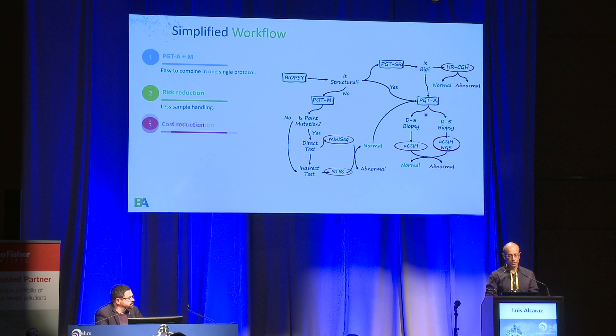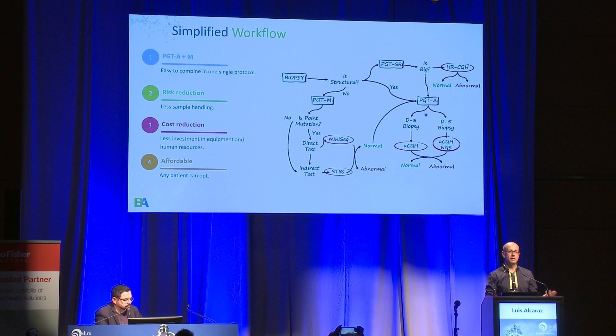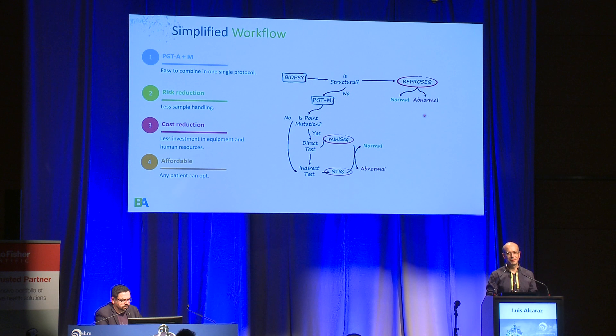That also means a cost reduction, because you don't need so many different pieces of equipment to do different things. And at the end, this makes the technology affordable for couples. At the very beginning we were trying to simplify everything — aneuploidy screening and monogenic disorders. But then REPRO-6 came along, so the aneuploidy screening was handled, and we focused on monogenic disorders.